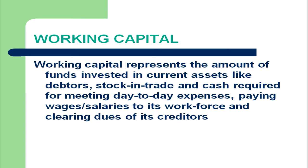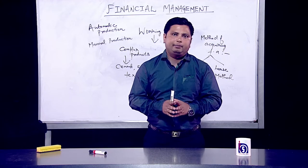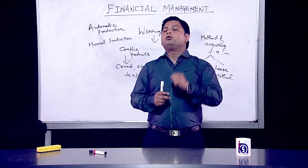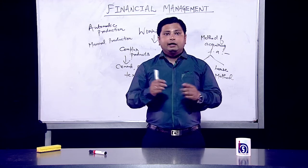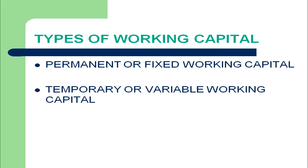Examples of current assets include debtors, stock in trade, and cash required for meeting day-to-day expenses — for paying wages or salaries to workers and for payment of dues to creditors. There are two types of working capital: permanent working capital and temporary working capital.